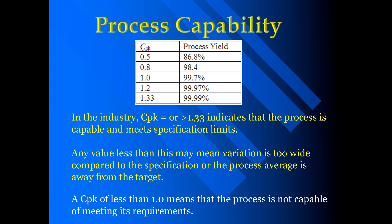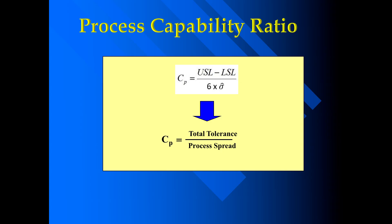If CPK is less than 1, it means that the process is not capable of meeting its requirements. The formula for CP is: the difference between the upper specification limit and lower specification limit, divided by the process spread, which is 6 times the standard deviation.